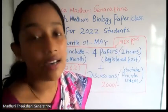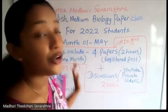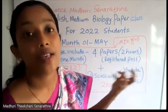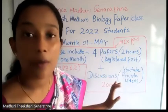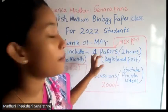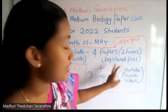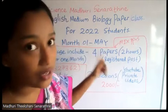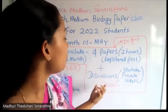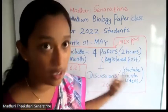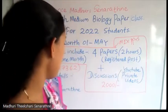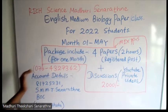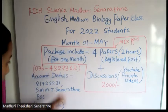You can do your corrections, and if you like, you can submit your work to me. Once you have done your payment, you will receive your papers via registered post within five days, and I will send you your discussions to your email address as previously mentioned.